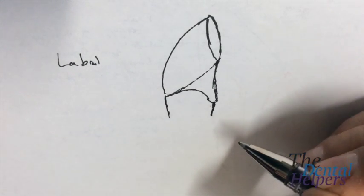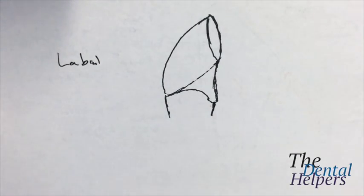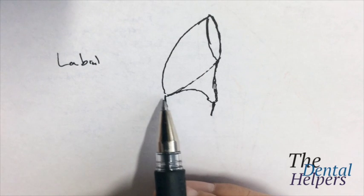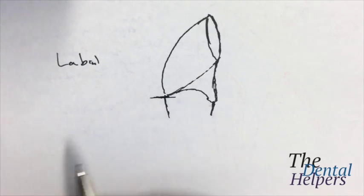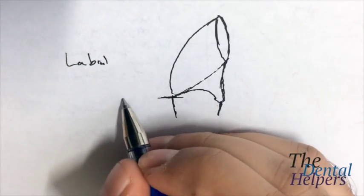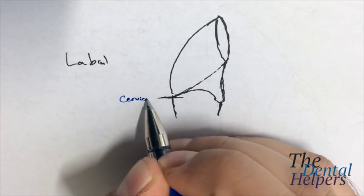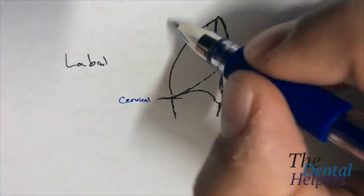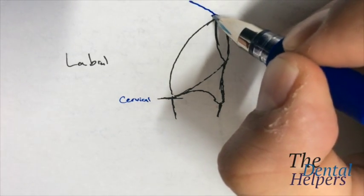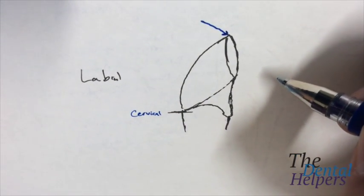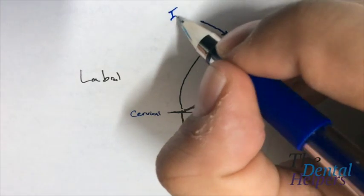And right here, I'm going to draw this a little better for you. I guess I ended up drawing the tooth anyway, so it's okay. So as we approach where the gum is, where the gingiva is, this is going to be called cervical. And as we approach the surface that we're going to bite on, it's called the incisal.